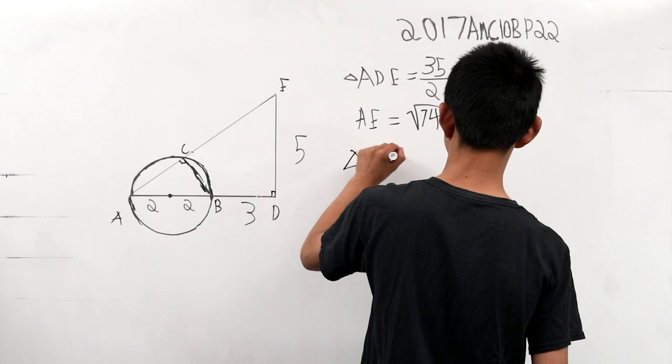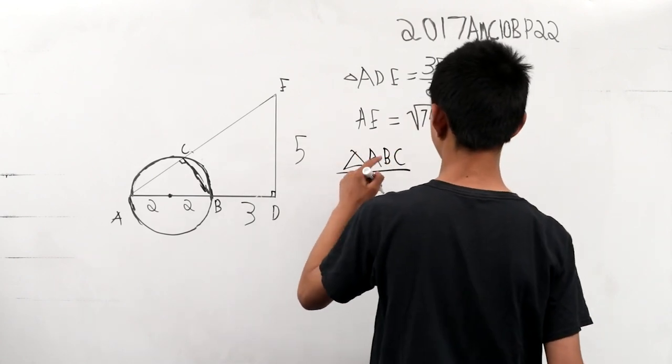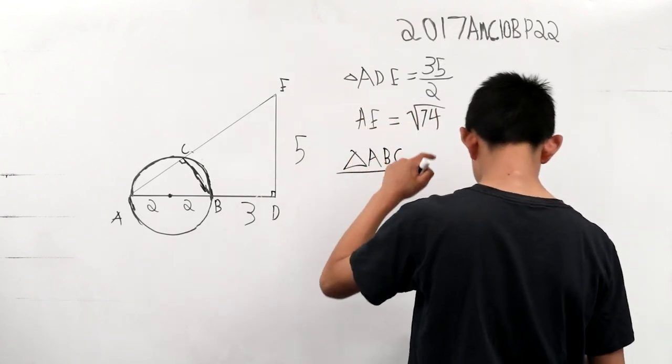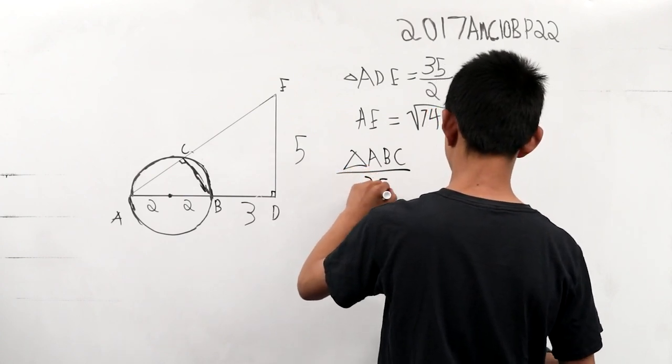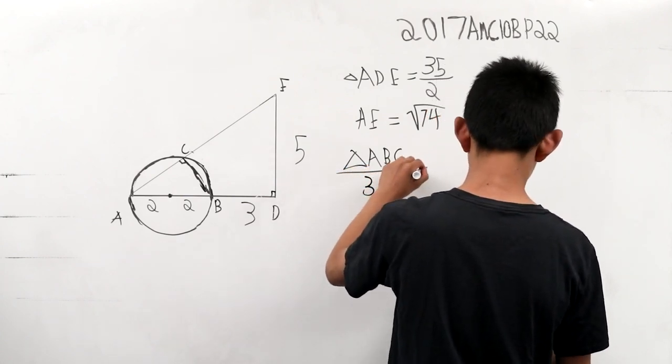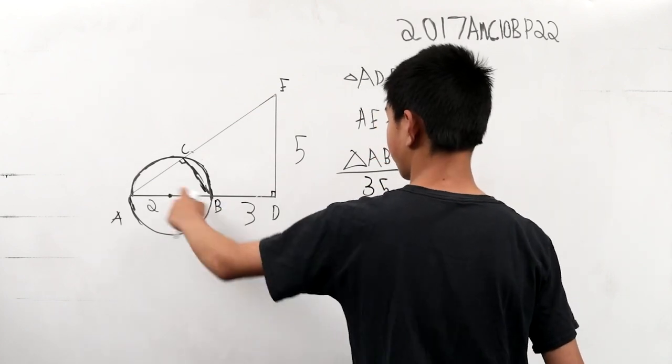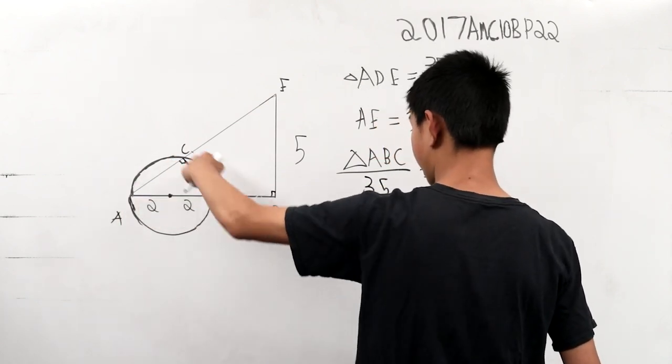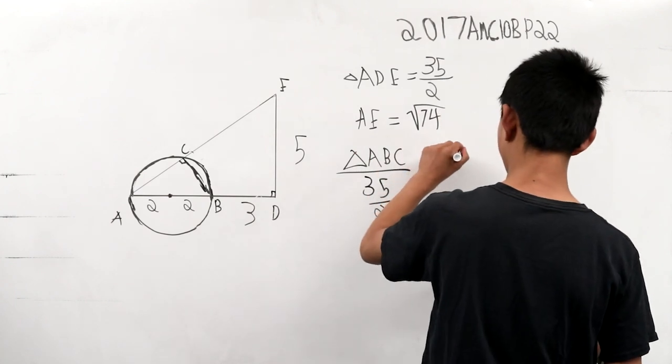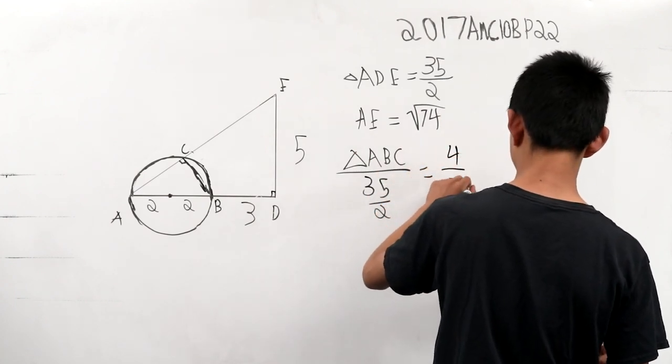...to the ratio of triangle ADE, which is 35 halves. We can set this equal to, well, what do we know? We can set the equal to this length, the hypotenuse, 4 over 70, square root 74.